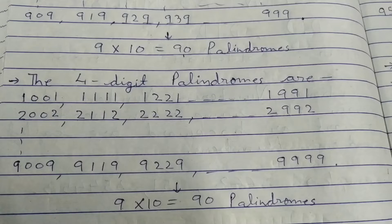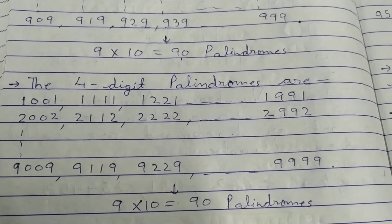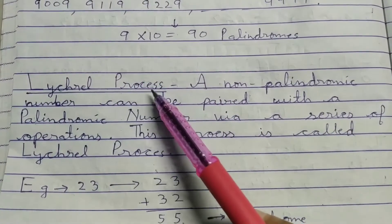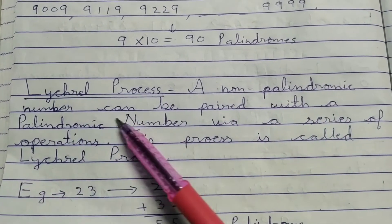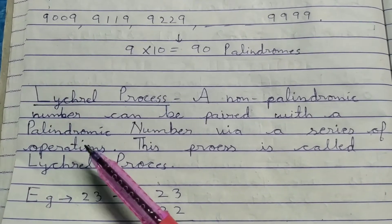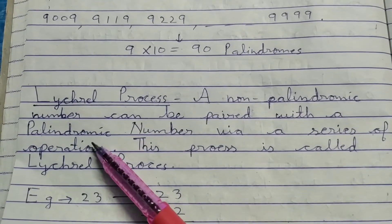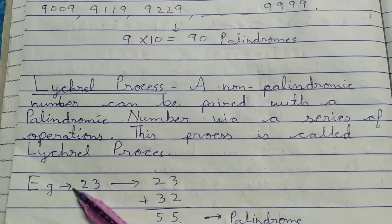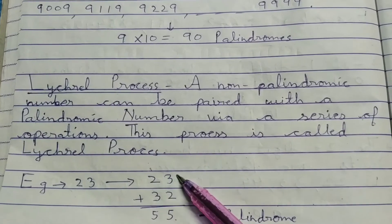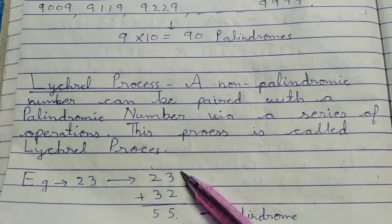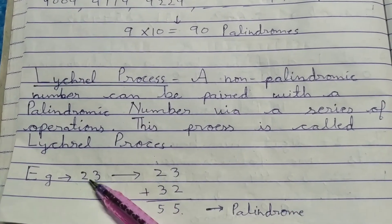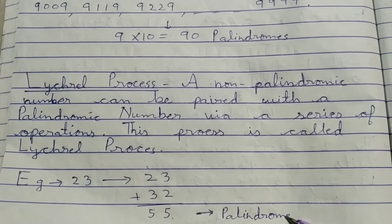In the same way, you can calculate the total number of palindromes with five, six, seven digits and so on. Now, for non-palindromic numbers there is a process called the Lychrel process, by which a non-palindromic number can be paired with a palindromic number via a series of reverse-and-add operations. For example, take 23 — reverse its digits to get 32, and add: 23 + 32 = 55, which is a palindrome. So the Lychrel process paired 23 with a palindrome in just one step.